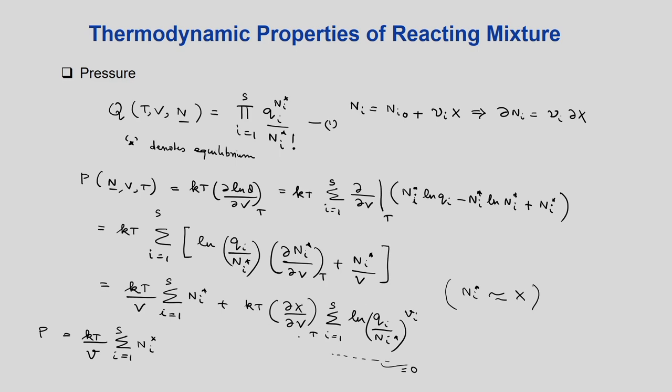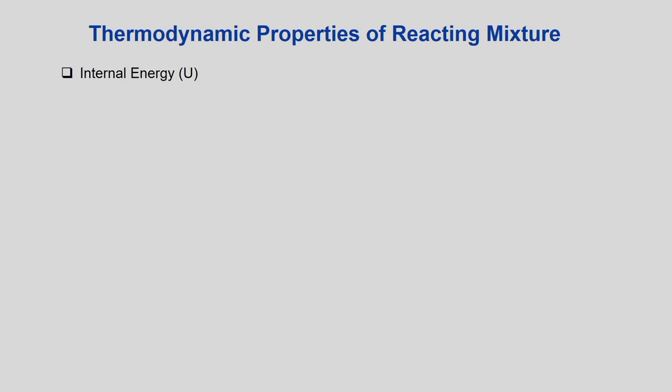The second term represents the effect of volume change with conversion at equilibrium. At equilibrium this term disappears, and we are only left with the first term P = kT·Σnᵢ/V, which is the ideal gas law. Now let us look at the internal energy U of the reacting species.